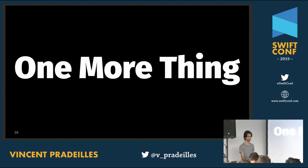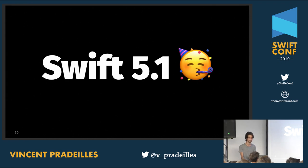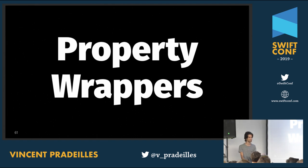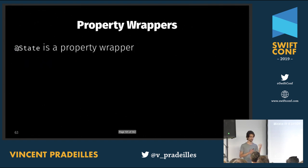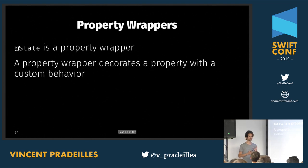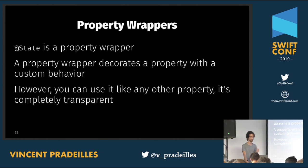This talk has a new addition since its first presentation in 2018, because Apple released Swift 5.1 with a feature called property wrappers. In SwiftUI code you've seen things like `@State` and `@Published` — those are property wrappers. A property wrapper takes a property and decorates it with custom behavior, completely transparently to the user — the compiler triggers the custom behavior when compiling your code.